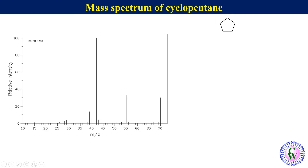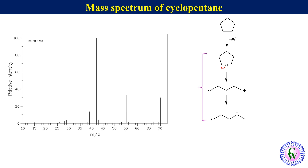Now let's discuss mass spectrometric fragmentation of cyclopentane. This is the mass spectrum of cyclopentane — we will go through the fragmentation and correlate major peaks with the structure of the corresponding fragments. Cyclopentane upon electron bombardment loses one C-C sigma bond electron to produce a radical cation, also called the molecular ion. All radical cation forms have an m/z value of 70, equal to the molar mass of cyclopentane.